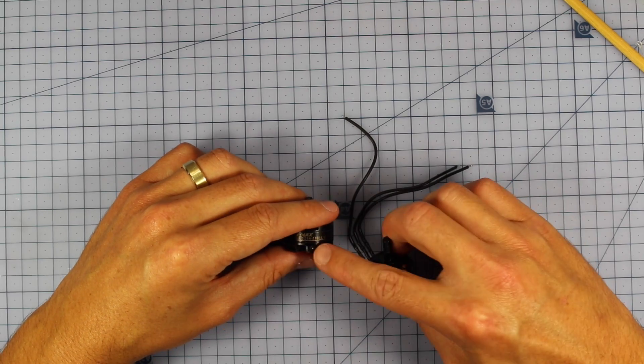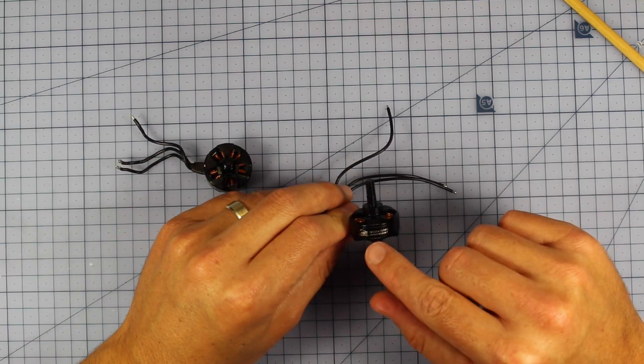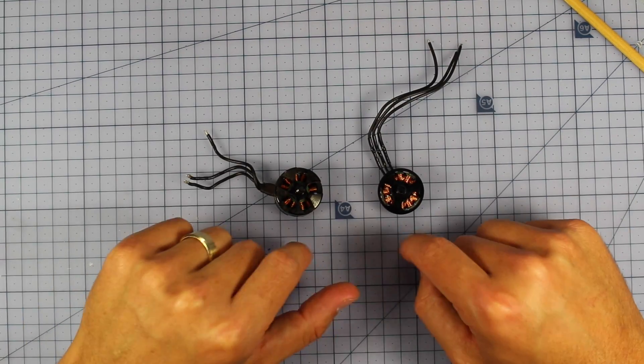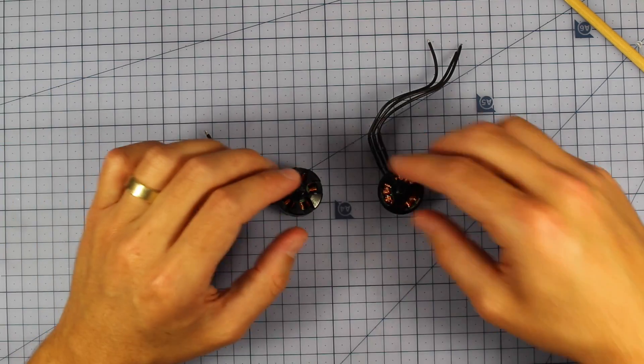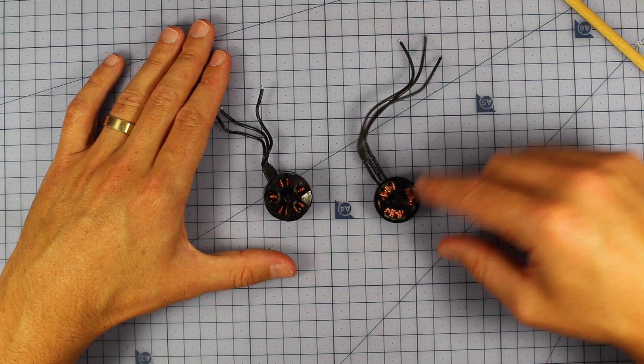I've got two motors here, they're exactly the same numbers, the 2204 2300 KV Emax motor and the 2204 2300 Cobra motor, and one of these is more efficient than the other. So that really comes down to how well they're made, their tolerances, and the types of copper in the wire and things they use like that.